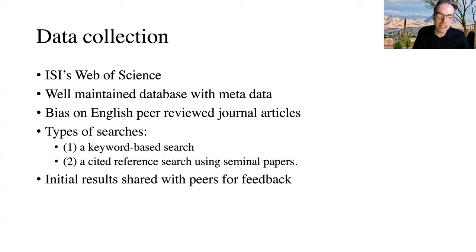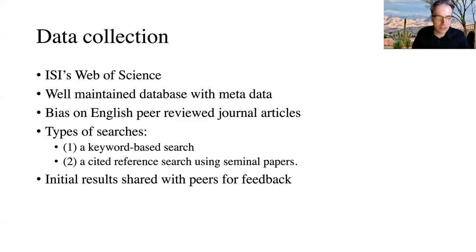It is important to realize that we do not aim to be complete, but to get a systematic overview of the field using a few objective search terms. There are two types of searches to identify publications. One is the keyword-based search looking for certain terms listed in the title, abstract, or keywords. The other search is based on seeds that looks at which publications cite the seeds.